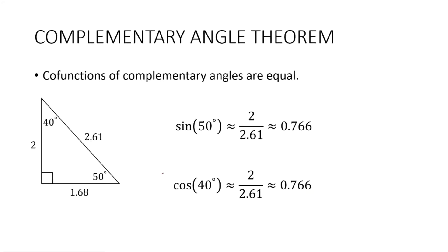This is also true for the remaining two pairs of co-functions. Tangent of 50 degrees equals cotangent of 40 degrees and vice versa. And secant of 50 degrees equals cosecant of 40 degrees, and vice versa.